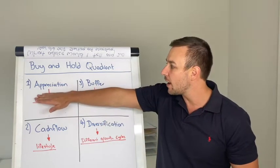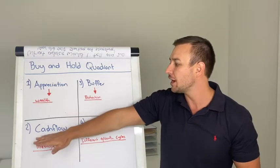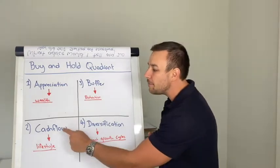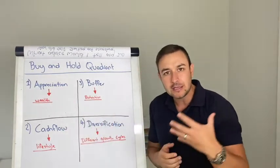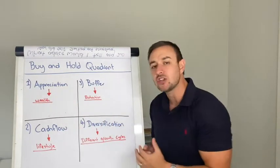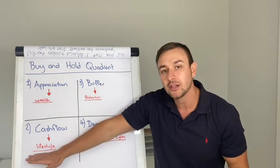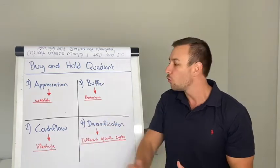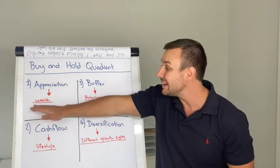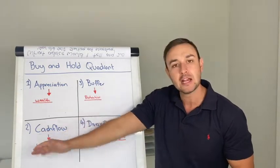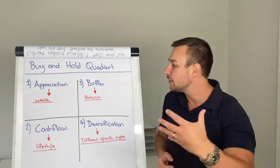Some properties that I have had have had more appreciation and others have had more cashflow. That means I have more wealth in some properties, but I have more lifestyle in the other. So when I come time to retire, I'm going to retire off the lifestyle, the cashflow, rather than the appreciation. But I need the appreciation to get to the cashflow, to get to more property in the future.